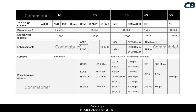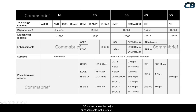For example, 2G GSM networks saw GPRS as a major enhancement, while IS-95 networks saw IS-95B as an enhancement. 3G networks saw major enhancements in the form of HSPA and EVDO. 4G LTE networks saw enhancements through LTE Advanced and LTE Advanced Pro.